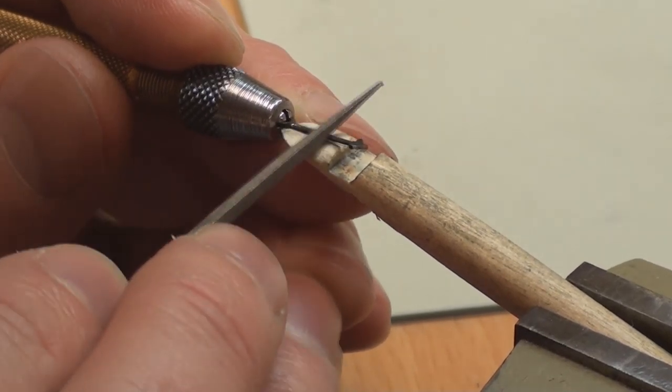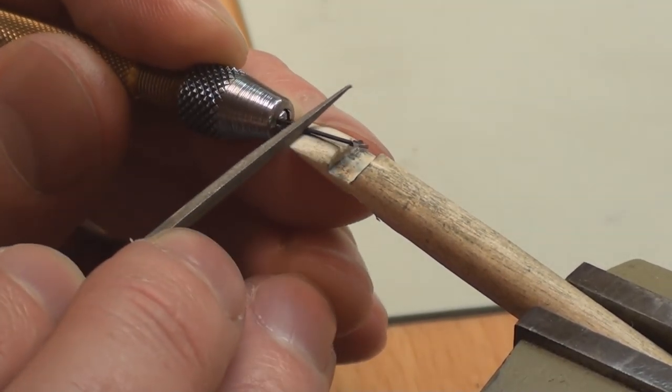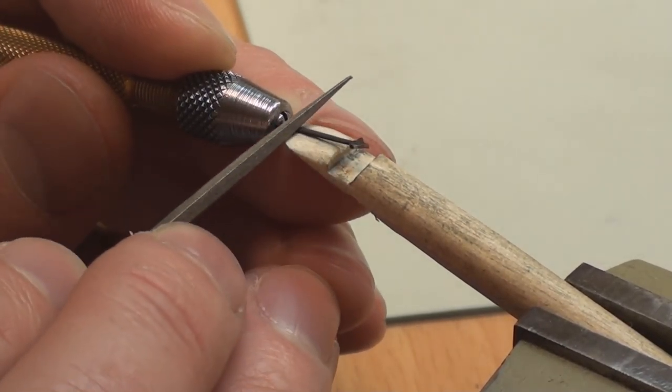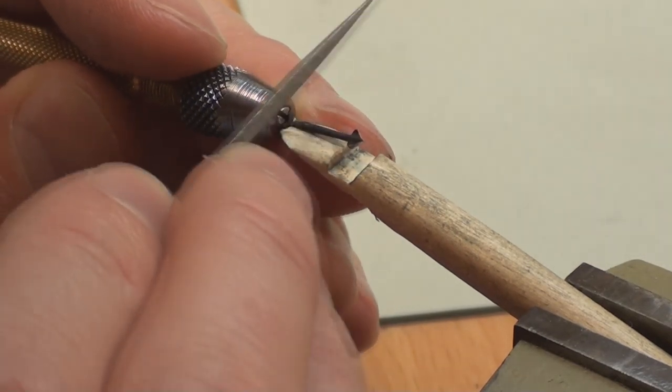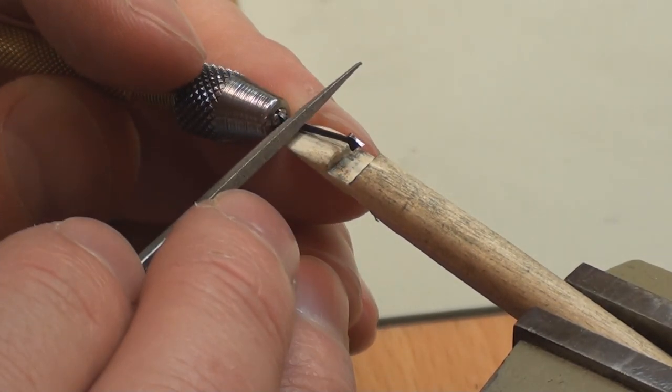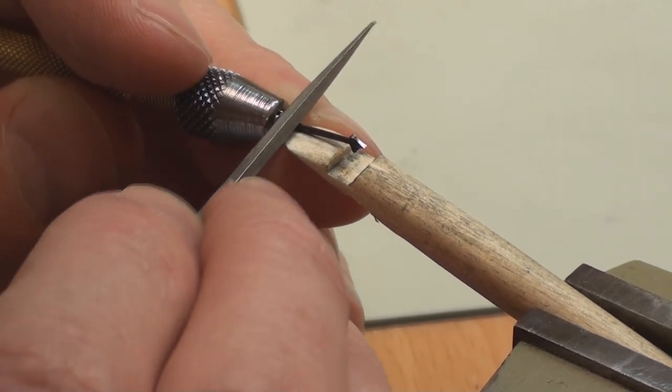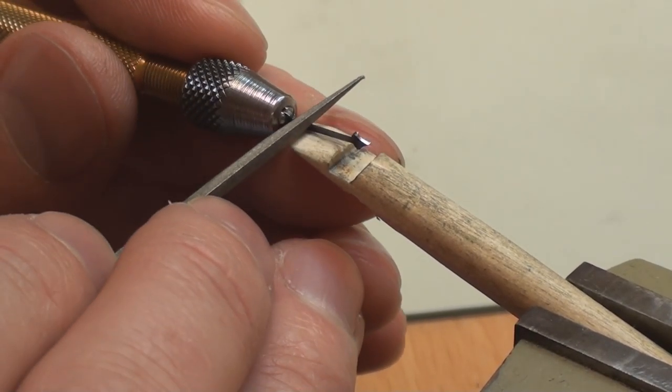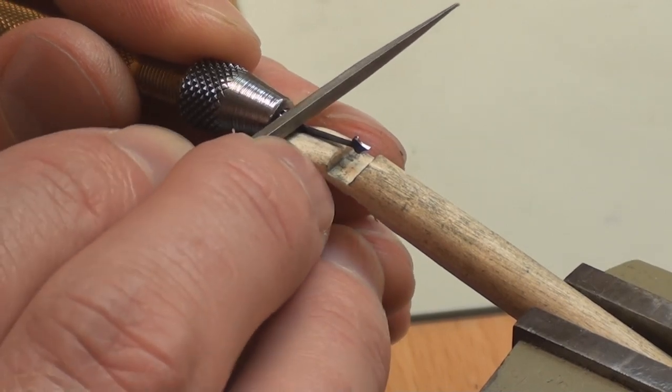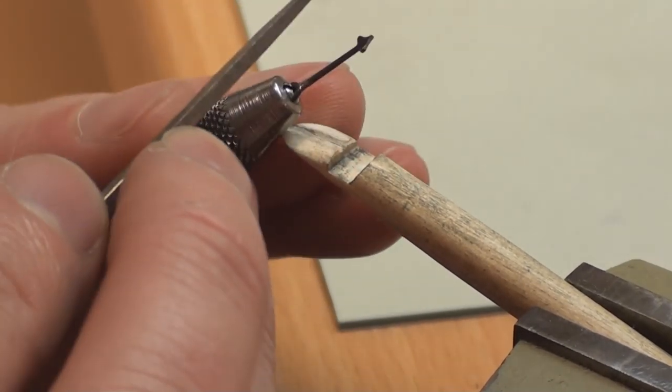So now resting on the wooden peg, we can now start to remove those burs from around the boss, and turning the hand onto its edge, again we can try and just sharpen up those corners with a quick stroke of the diamond file.